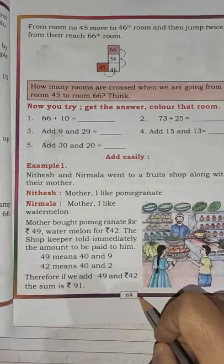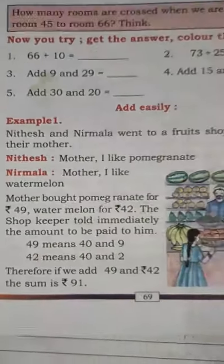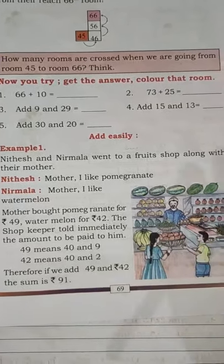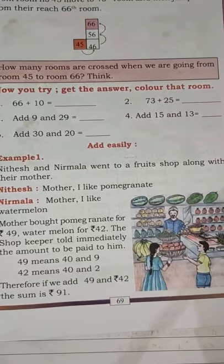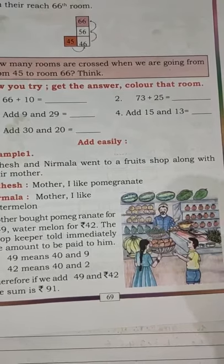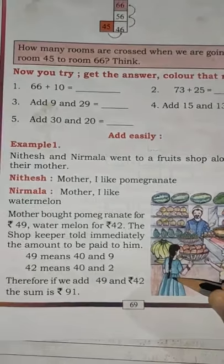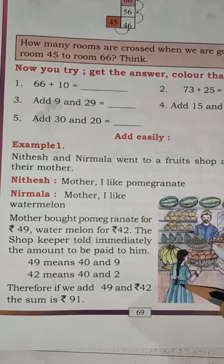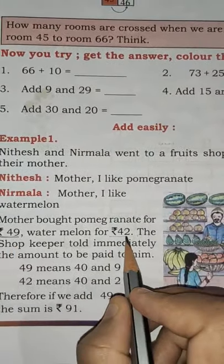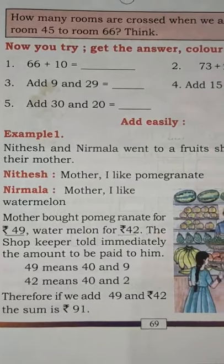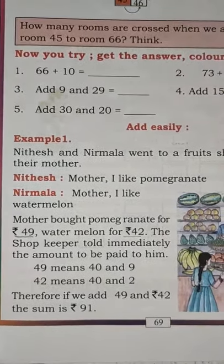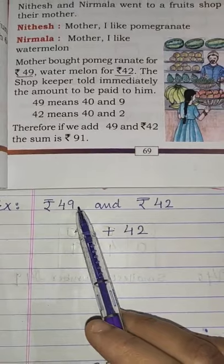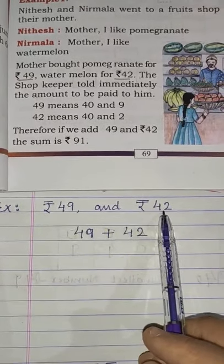Now let us know more about addition. Open page number 69. Here are the examples. There is a brother and sister named Nitesh and Nirmala. They both went to a fruit shop with their mother. Nitesh asked his mother to buy pomegranate, whereas Nirmala asked her mother to buy a watermelon. The mother bought pomegranate for rupees 49 and watermelon for rupees 42. The shopkeeper asked them to pay the total amount. Now the question is, how are they going to add it? Let us add it.